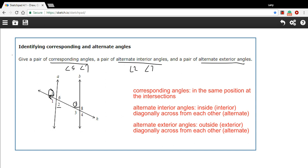So if I had 5 here, then 4 would be an alternate exterior angle. They're both on the outside and they're diagonally across from each other. So angle 4 and angle 5.